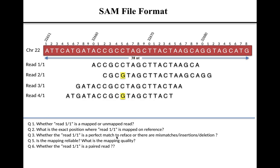If you want to know whether Read 1 is a perfect match or has mismatches, as we can see, Read 1 has 100% match with the subsequence of the reference sequence, so we can say Read 1 is a perfect match. However, if you want to know the mapping quality for Read 1, just looking at the graphical representation cannot answer this question, because there is not sufficient information stored in the graphical representation related to mapping quality.